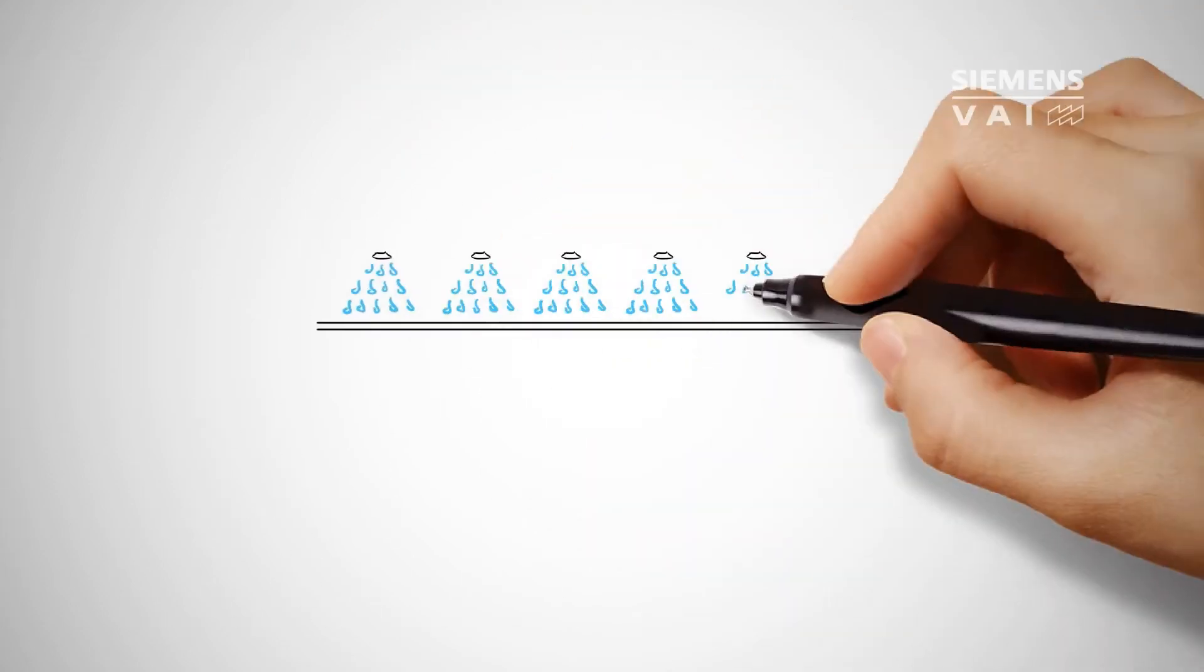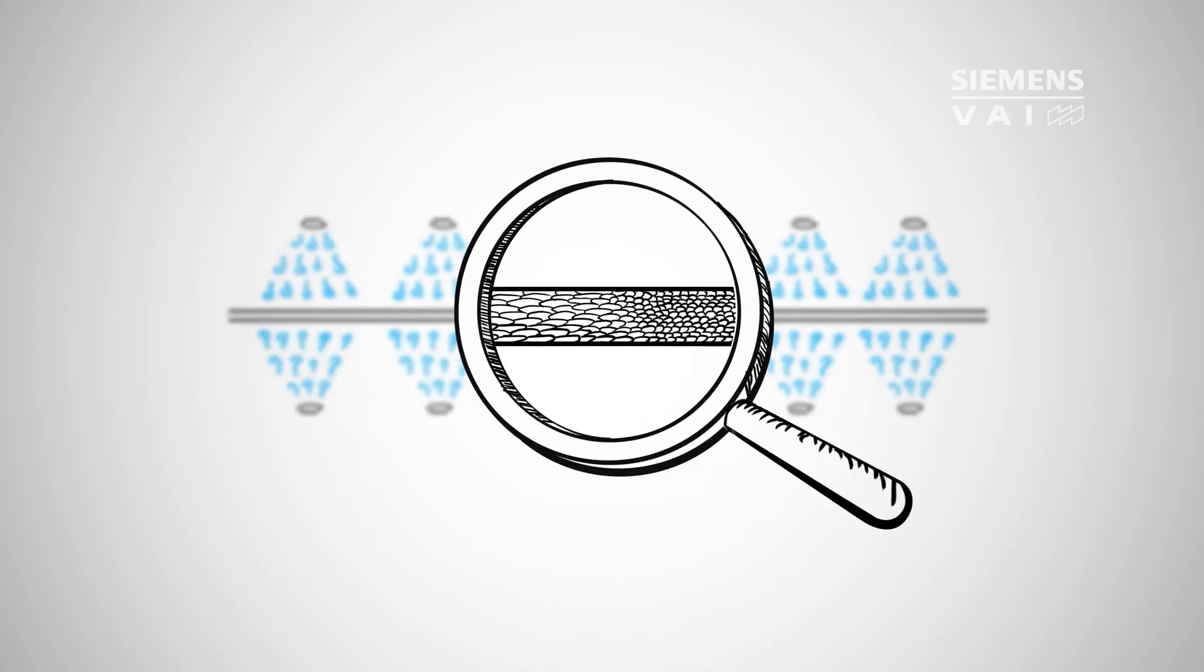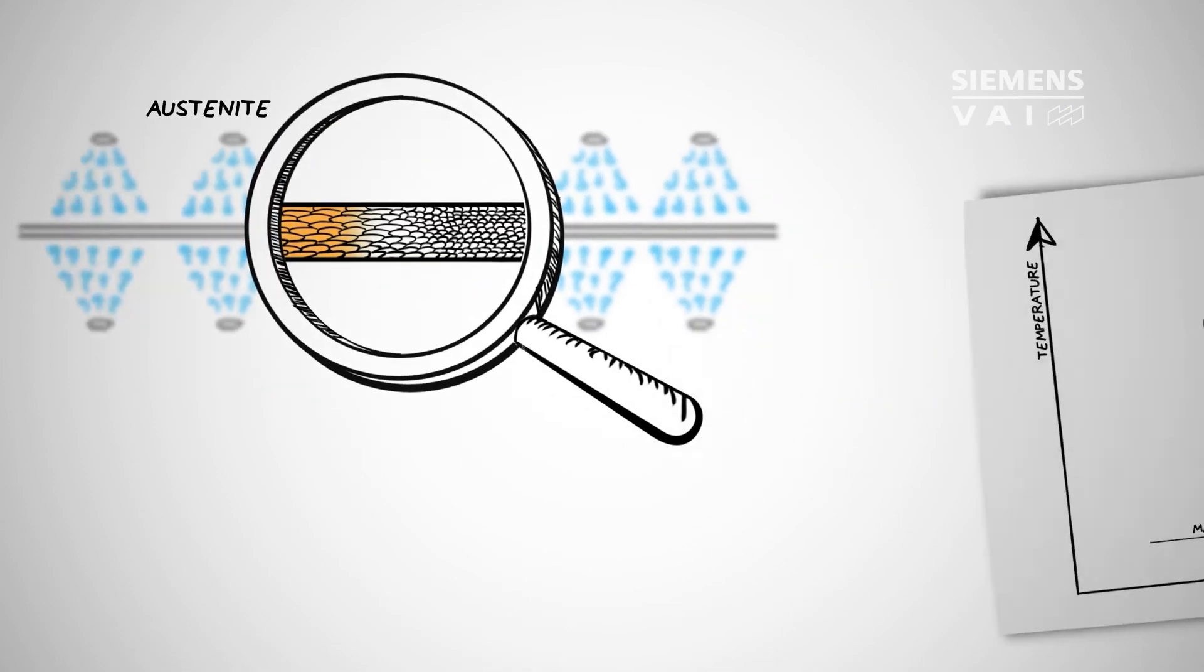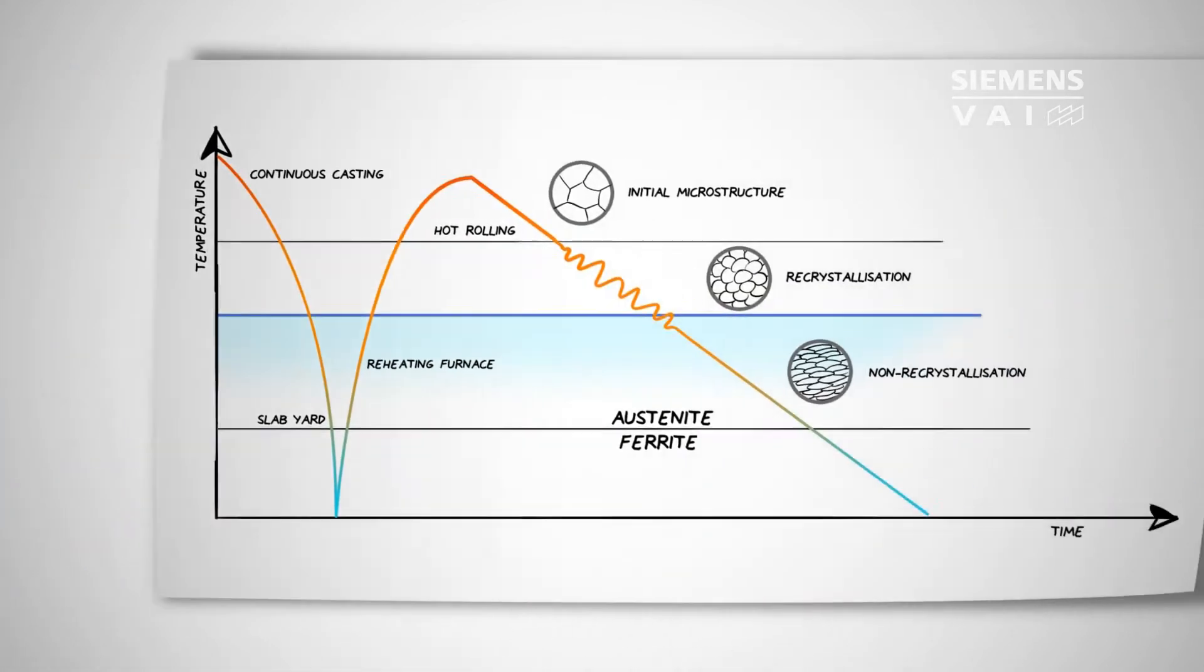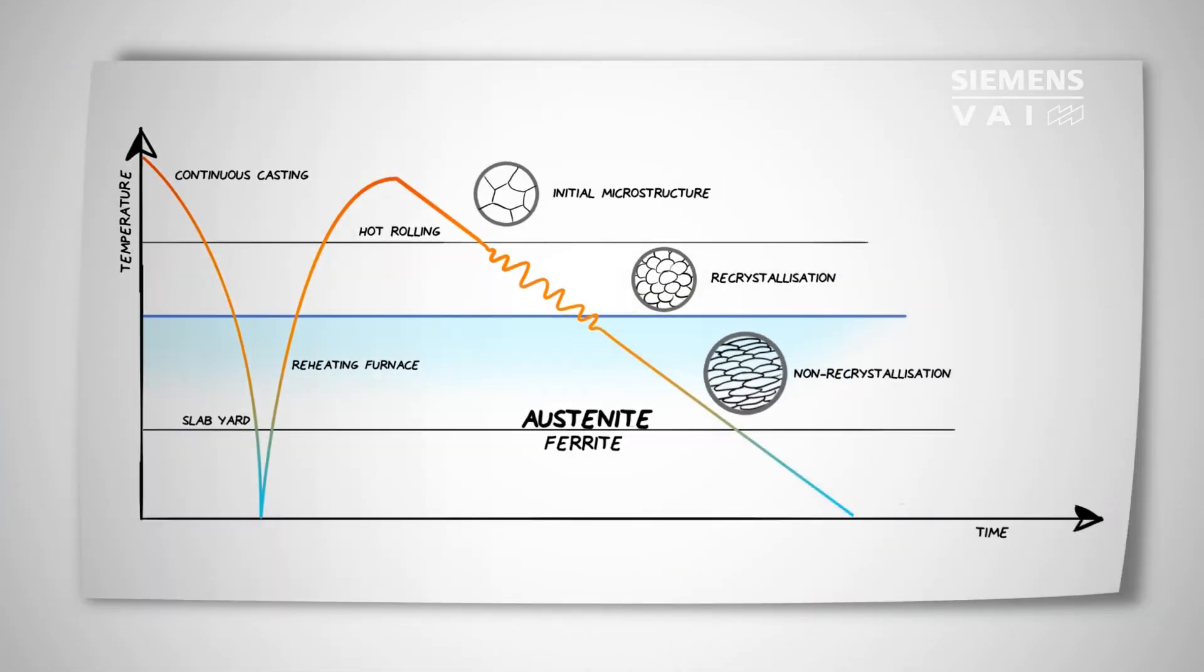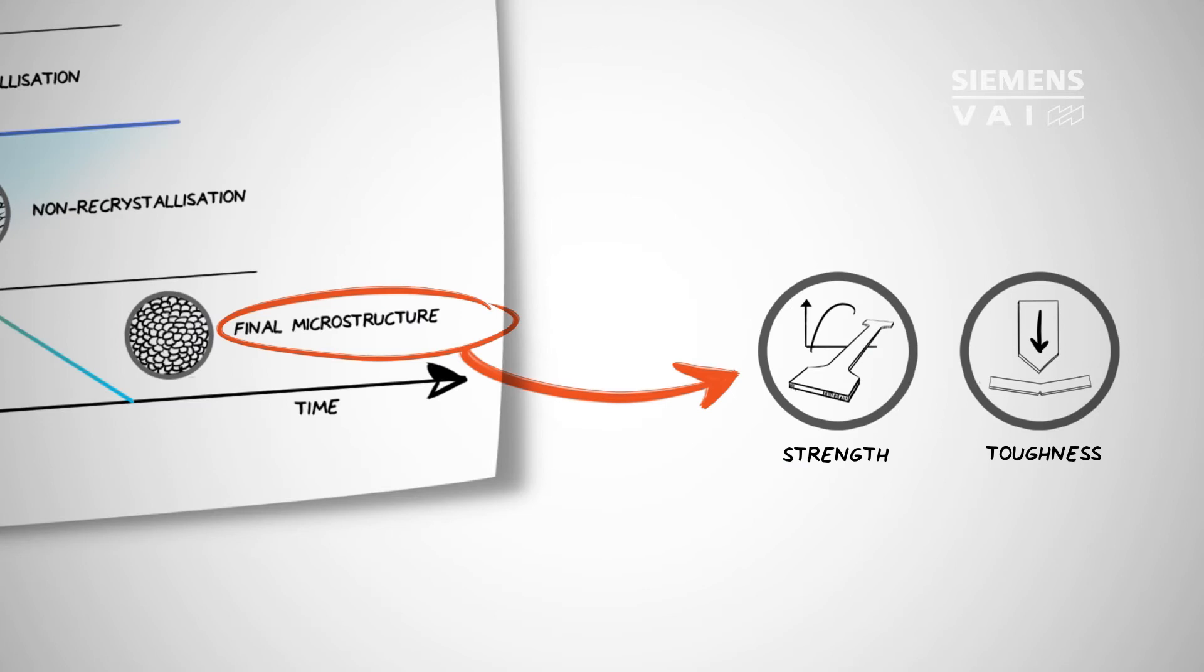In the cooling zone the structure of the steel is converted from a high temperature crystalline form known as austenite into a low temperature form containing ferrite and certain percentages of bainite, pearlite or martensite. During this transformation the pancaked austenite grains provide the best possible basis for the creation of a very fine ferrite microstructure. This is the origin of high strength steel.